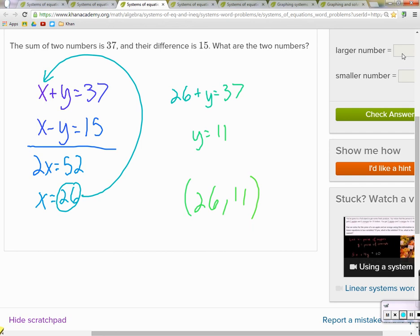Oh, they're not asking us for X and Y. They're asking us for the large number and the small number, right? So the large number is 26, the smaller number is 11.